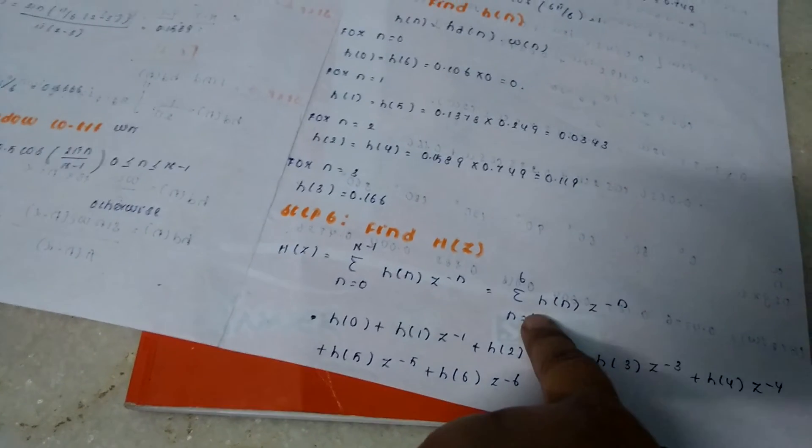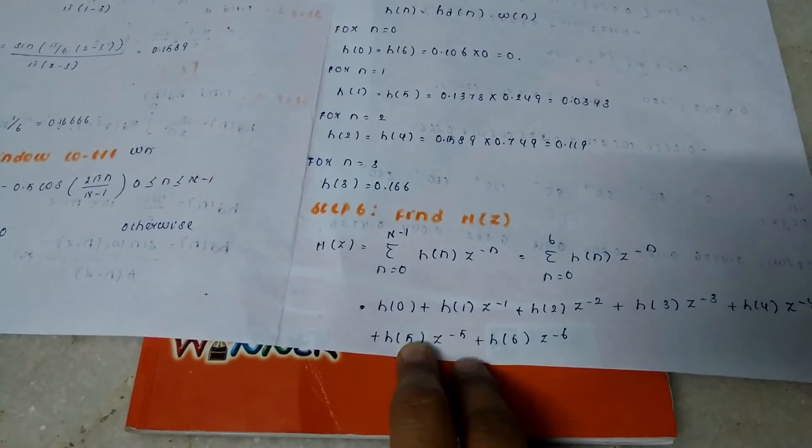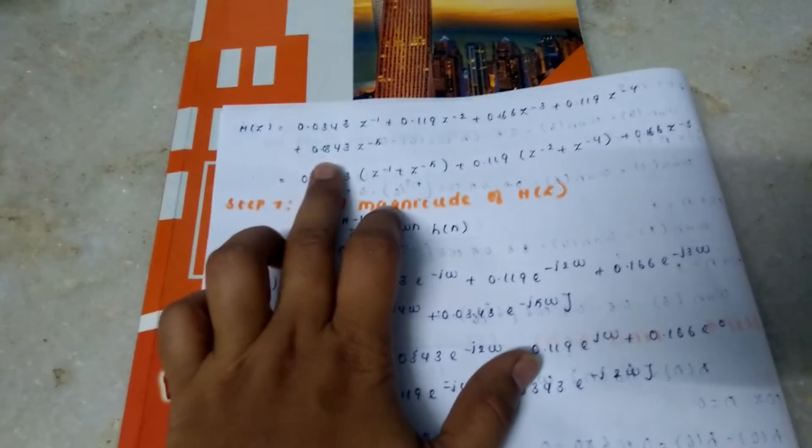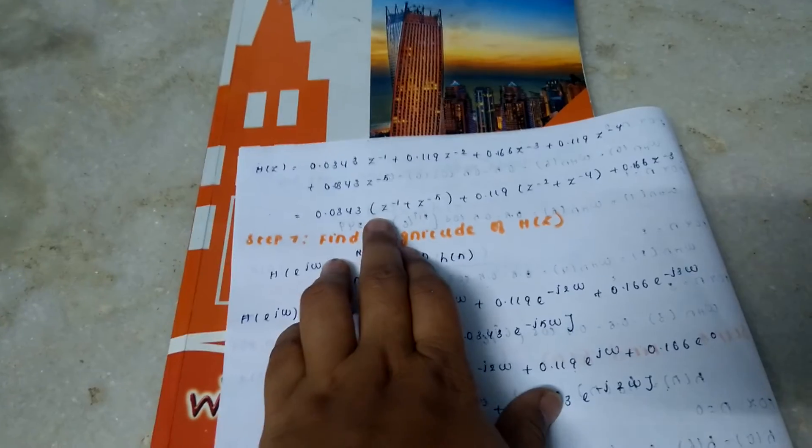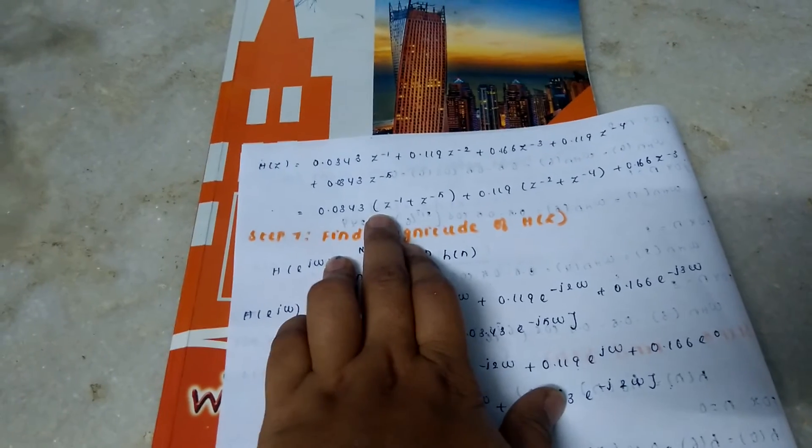In the next step, substitute the value of h(0), h(1), h(2), h(3) up to your ending value.